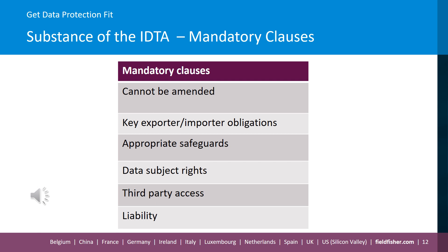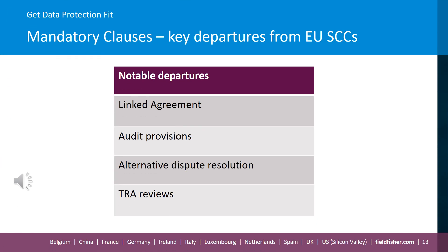The mandatory clauses also contain points regarding liability. The key point is that the parties cannot include anything in the IDTA or the linked agreement that limits or excludes either party's liability to relevant data subjects or to the ICO under this IDTA or under data protection laws. The ICO is entitled to bring a claim against either the exporter or importer for breaches of certain provisions of the IDTA. If the importer is a processor or subprocessor, the mandatory clauses set out that the linked agreement must contain the processor terms compliant with Article 28 of the UK GDPR, and if there is any conflict between these agreements, the IDTA takes precedence. The IDTA also recognises that audit provisions may have been agreed under the linked agreement and that those provisions will apply under the IDTA as well, giving parties more scope to negotiate those often tricky audit terms.